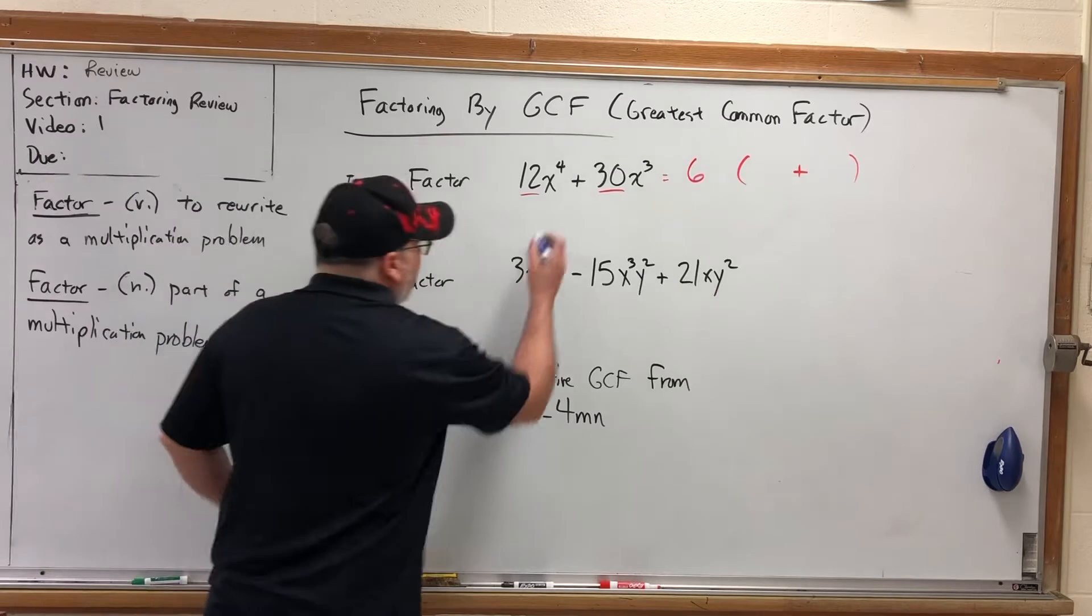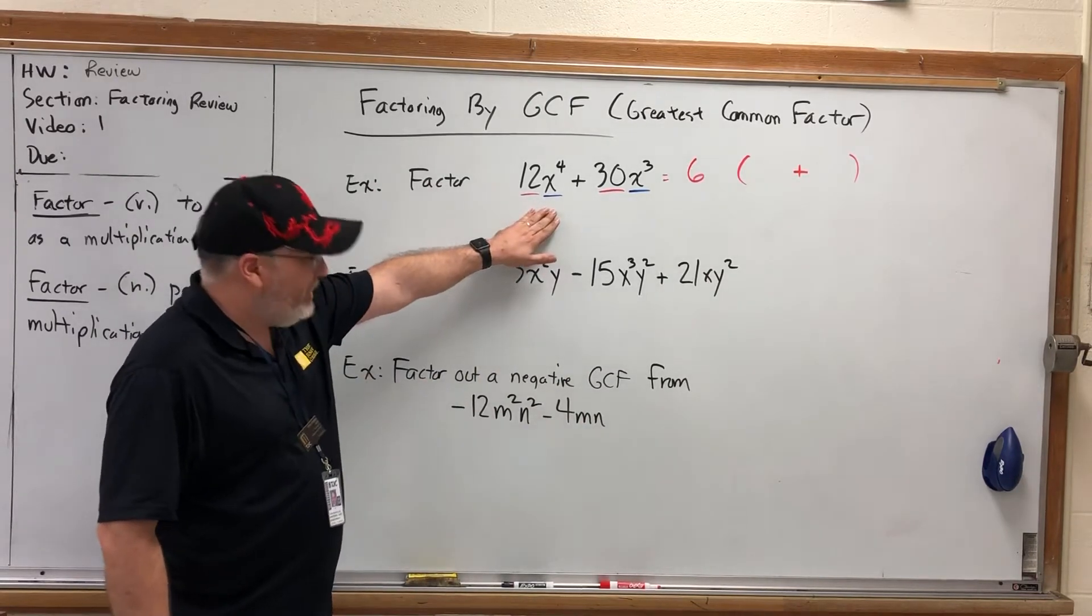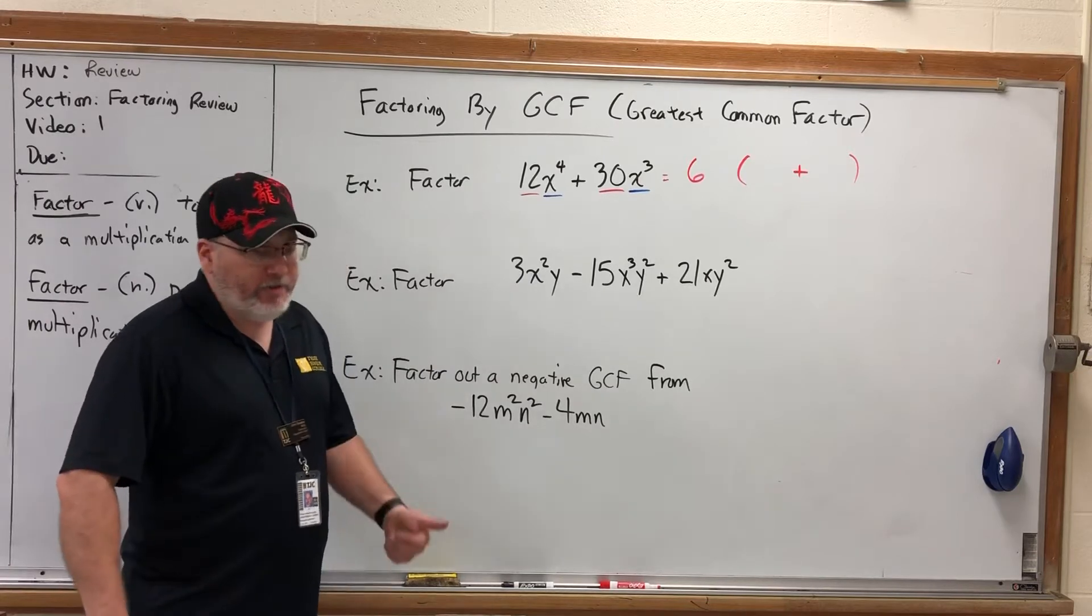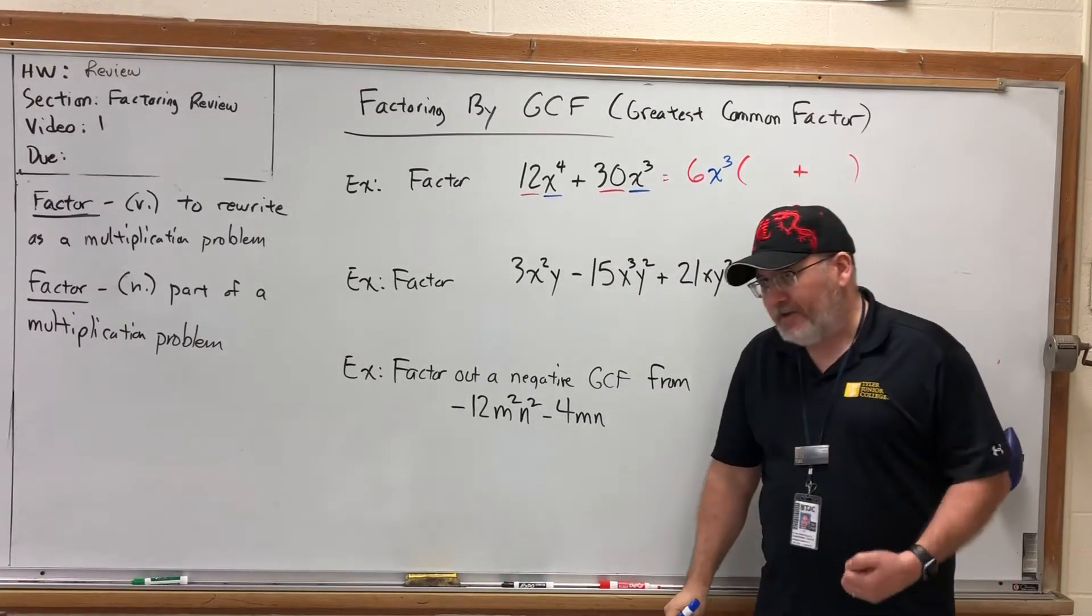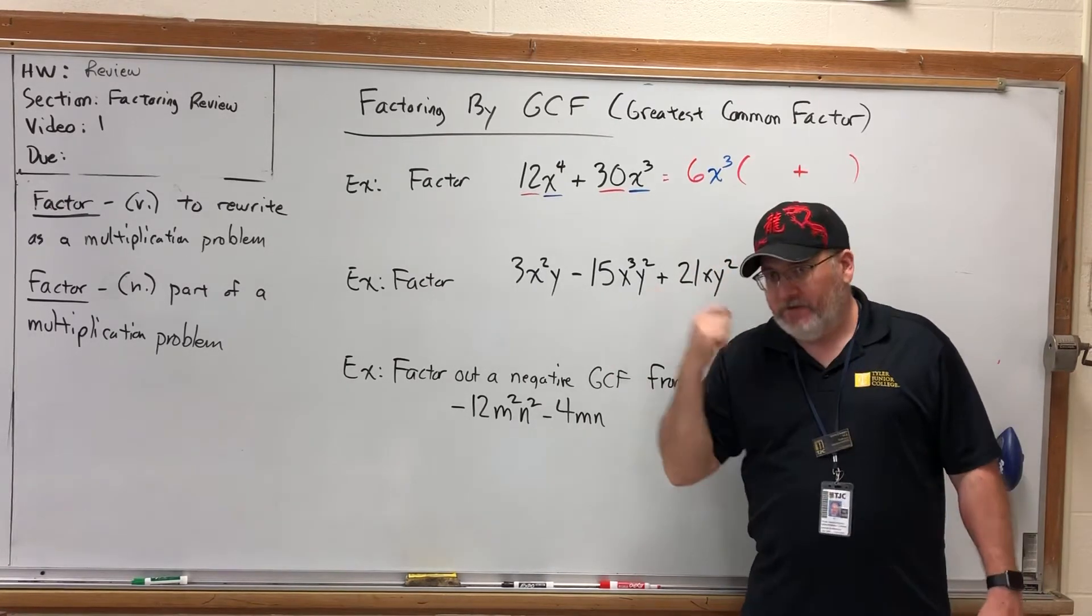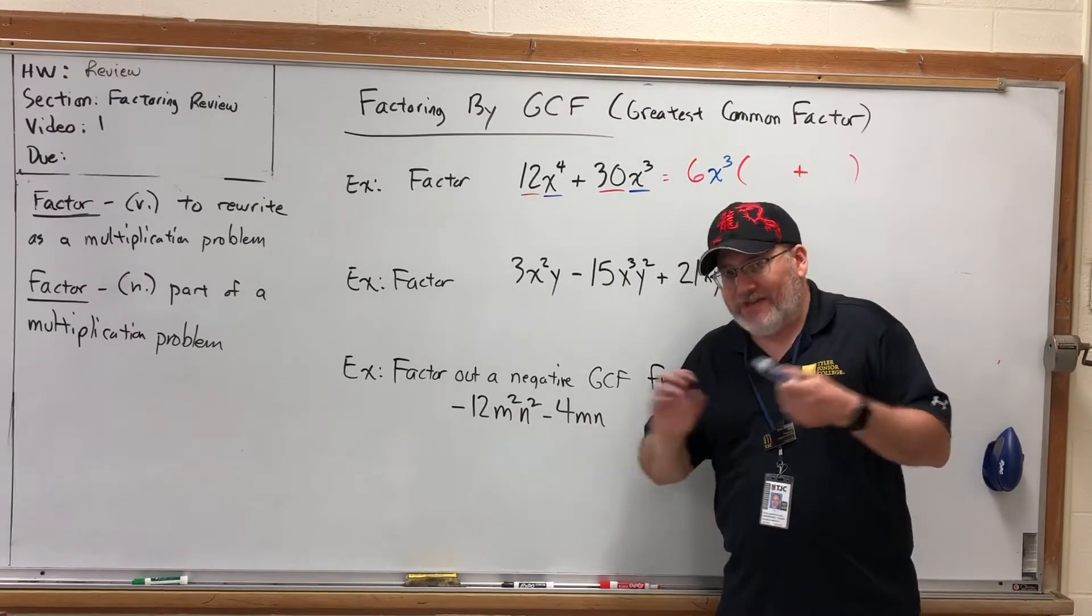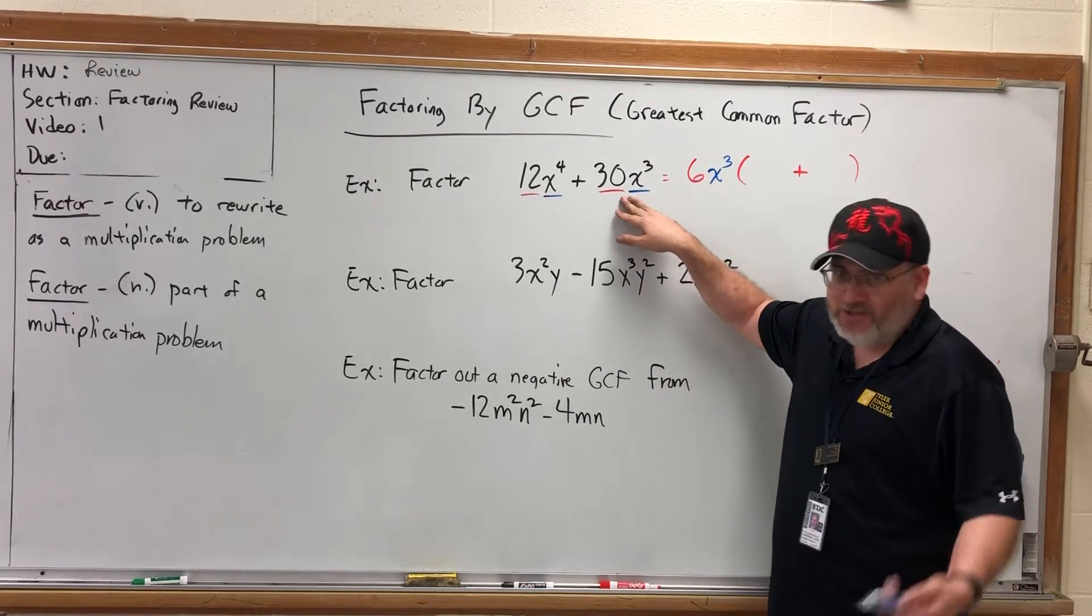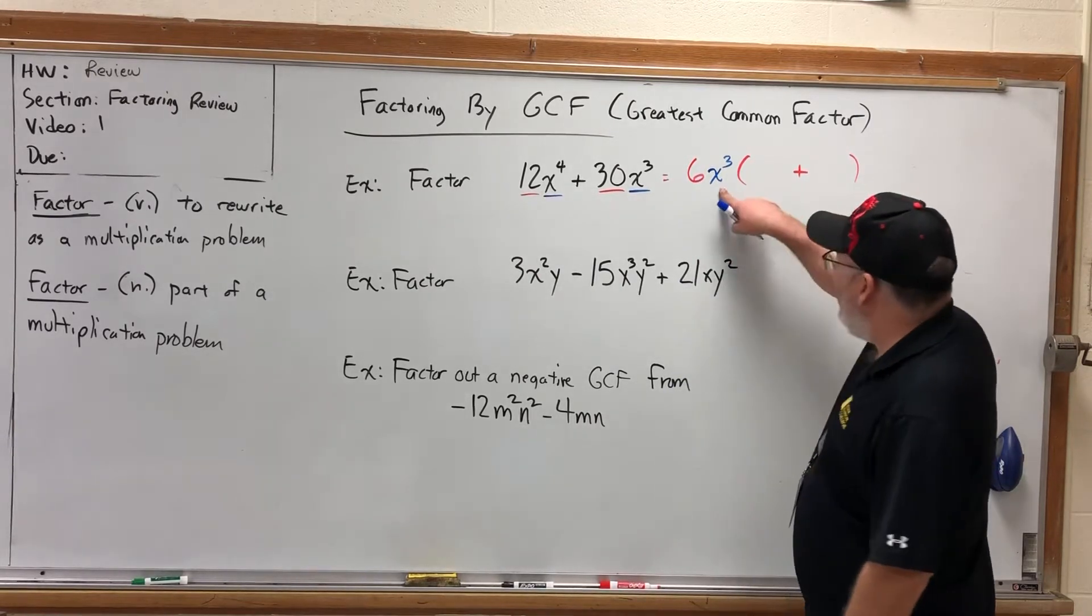The second thing you look at when you're building your greatest common factor are the variables, and more specifically, their exponents. This first term has four x's multiplied on it, and this second term has three x's, obvious by their powers. To locate the greatest common factor from terms with the same letter, you simply go to the least power. The least power here is x to the third. The reason it's the lesser of the two powers, even though we're looking for the greatest common factor, is remember, we're undoing the distributive property. What's the most number I could have given everybody? I couldn't have given everybody four x's because he would have had at least four. The smallest power tells you the most number of x's everybody could have received.